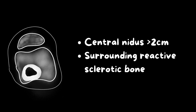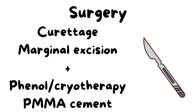For treatment, in smaller tumors curettage may be enough, but for bigger tumors marginal excision — complete excision of the tumor from its margins — is performed along with adjuvant therapy like phenol or cryotherapy, which ensures no remnant tumor cells and helps prevent recurrence. If the bone defect is excessive after surgery, it can be augmented using bone cement called PMMA, or polymethylmethacrylate cement.